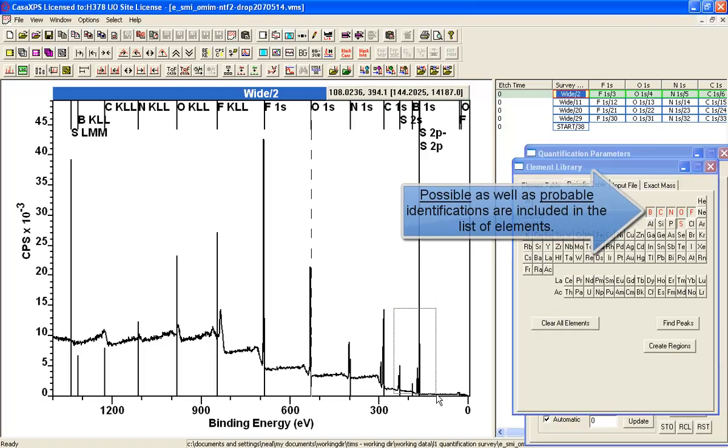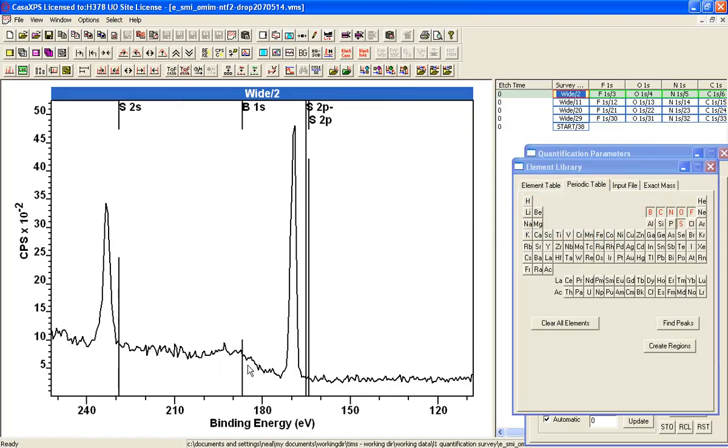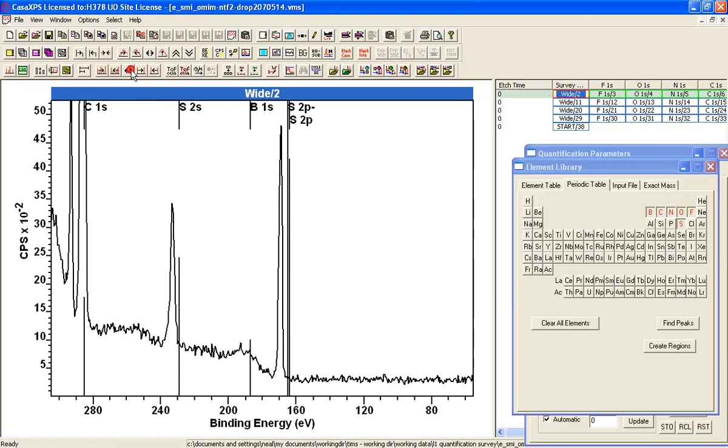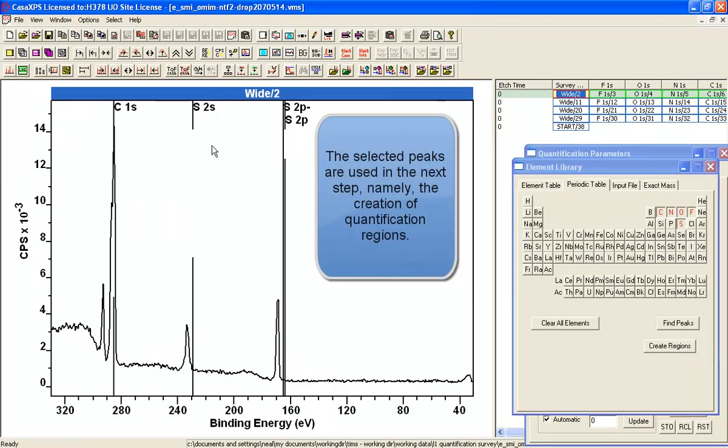I don't believe there's any Boron in this sample. And if I look at the data, the structure that has been identified as Boron is probably a loss peak associated with this S2P. And so we'll deselect that. And we'll just check that the other peaks make sense.